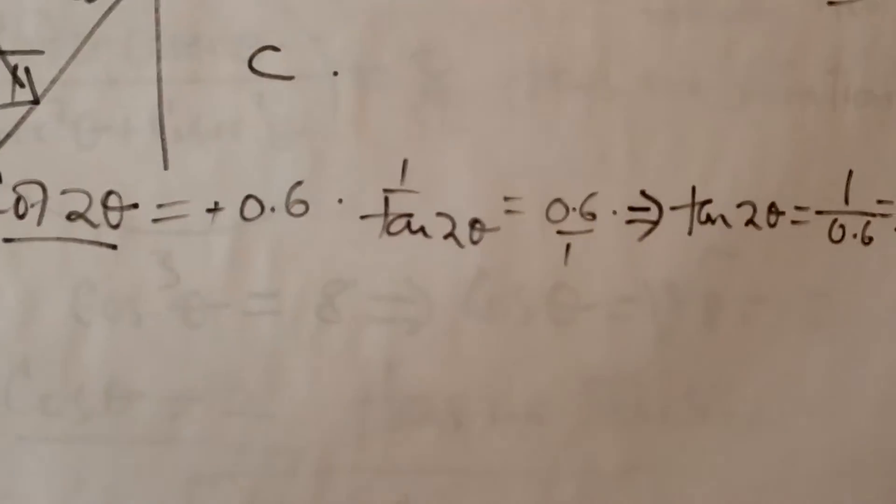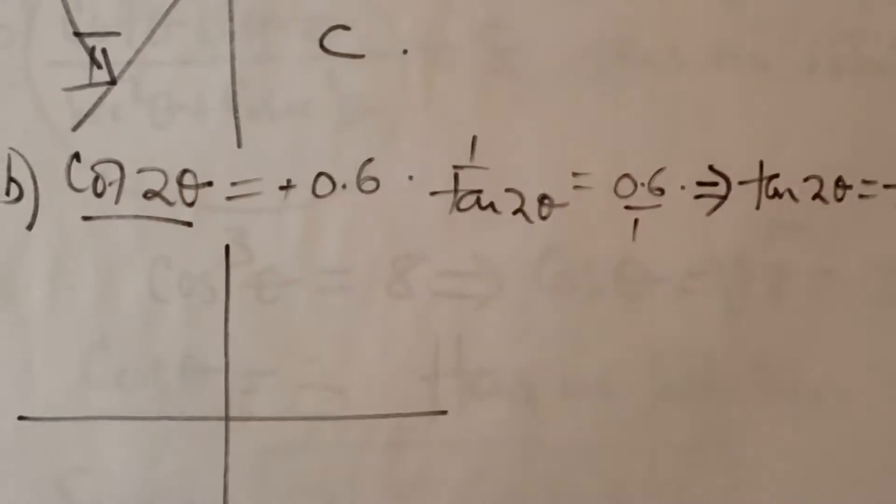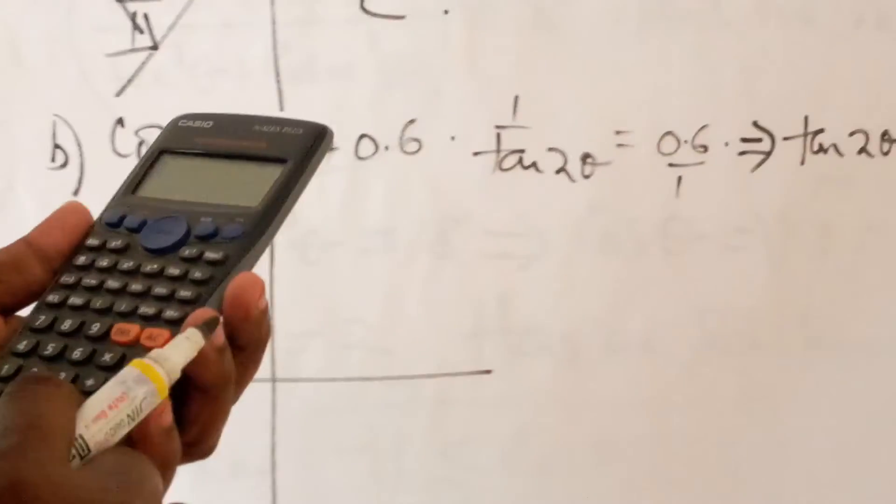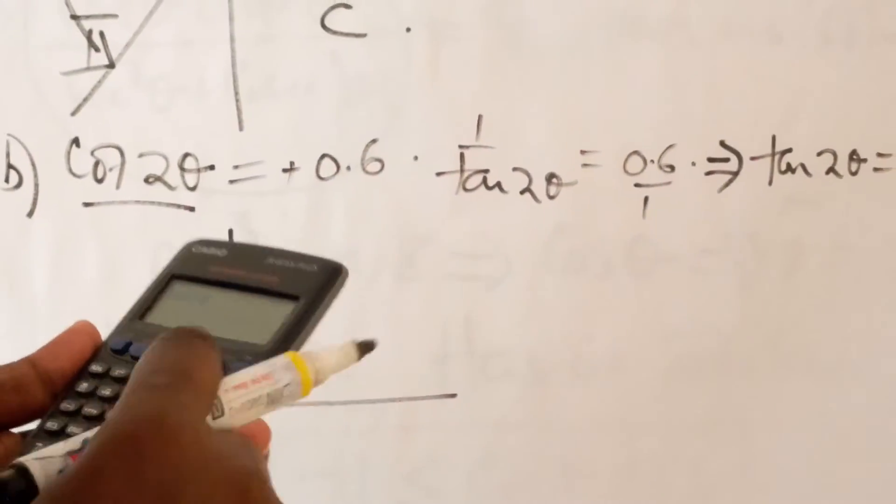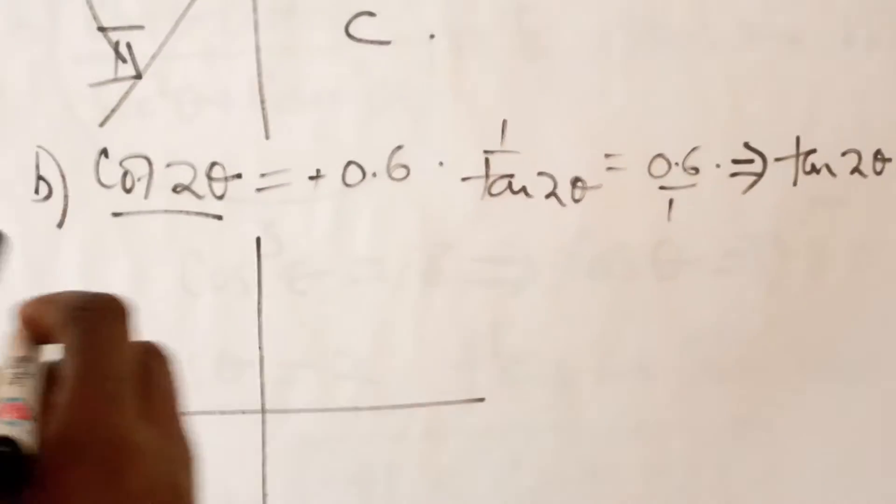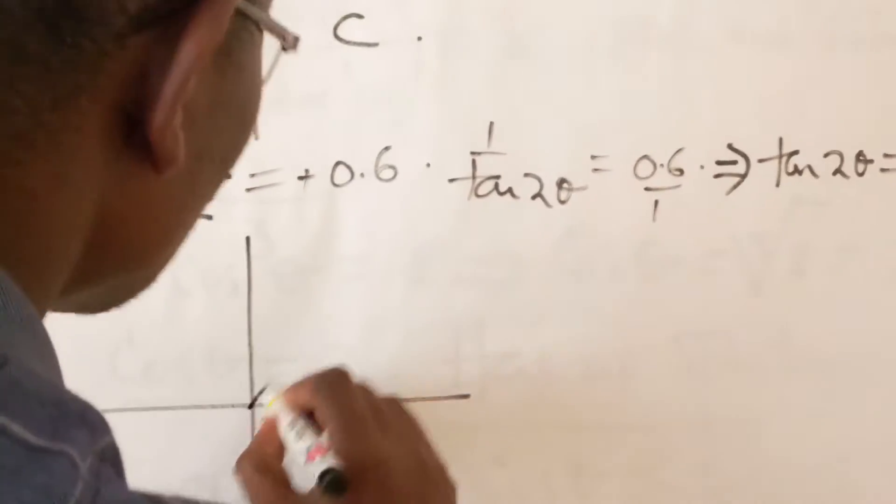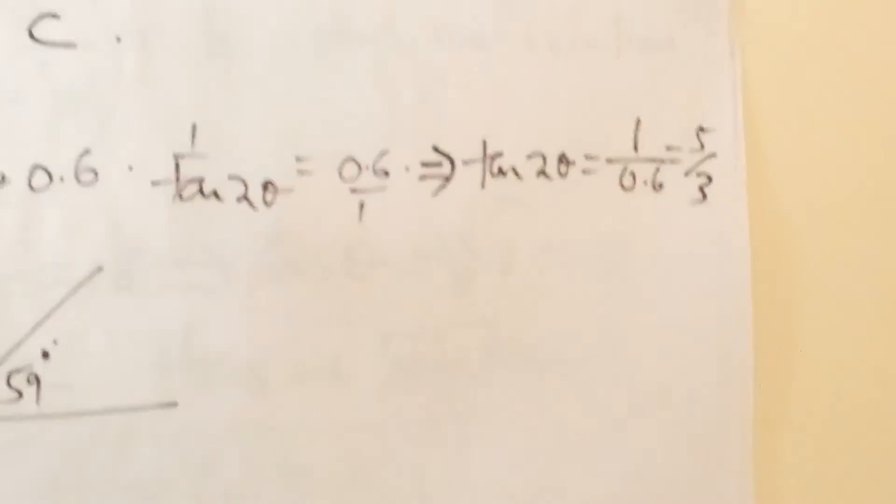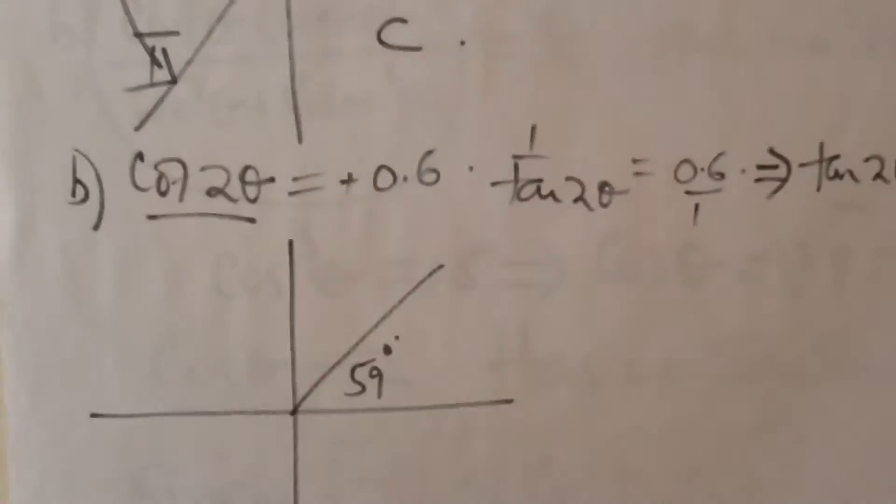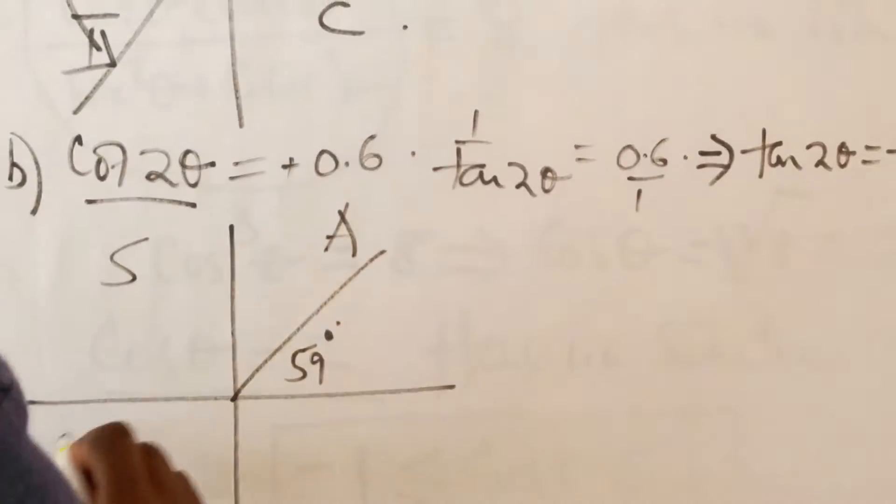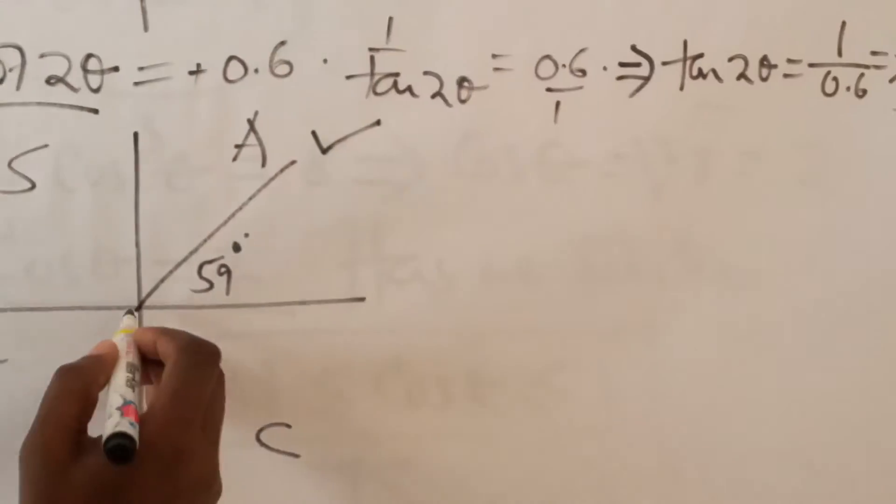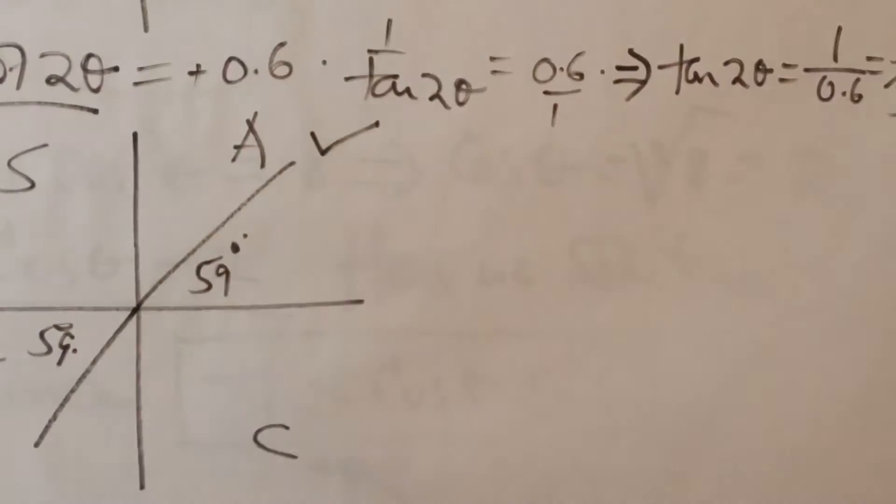We need to identify the angle whose tangent is 5 over 3. 5 divided by 3 equals shift tan answer. We have 59 degrees. And because this is positive, if we use all science teachers complain, then we are talking about quadrant 1 and quadrant 3. So we are going to have 59 degrees there.